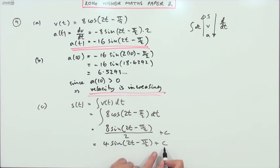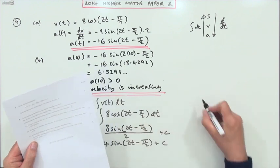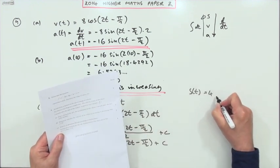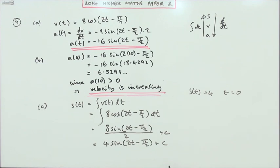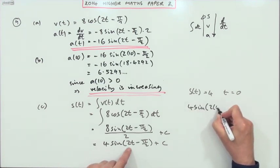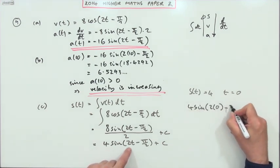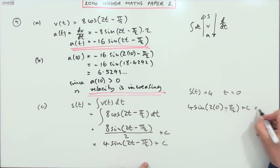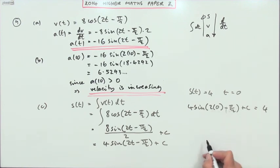Now, we've given values so we can find this C. It says in this part here, S(t) equals 4 when t equals 0. So I can put that into that. This should come to 4 when I put 0 in for t. So 4 sin(2 times 0 - π/2) + C should equal 4. Well, nothing take away π/2, it's negative π/2.